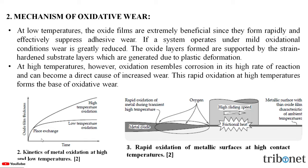In figure two, we can see the kinetics of metal oxidation at low and high temperatures, and we can see that oxide film thickness increases as the temperature increases. In figure three, we can see the rapid oxidation of metallic surfaces at high contact temperatures.